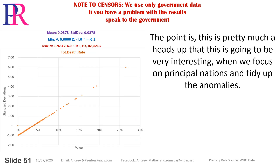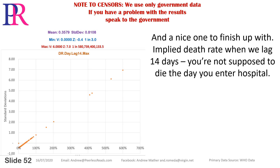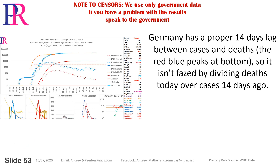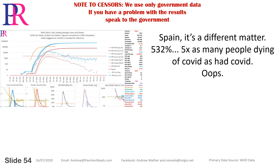This is going to be very interesting when we focus on principal nations and tidy up the anomalies. The implied death rate with a 14-day lag is informative: you're not supposed to die the day you enter hospital. Germany has a proper 14-day lag between cases and deaths — the red and blue peaks align — so dividing deaths today over cases 14 days ago isn't phased. Spain, however, is a different matter: 532%, meaning five times as many people dying of COVID as had recorded COVID cases. Oops.